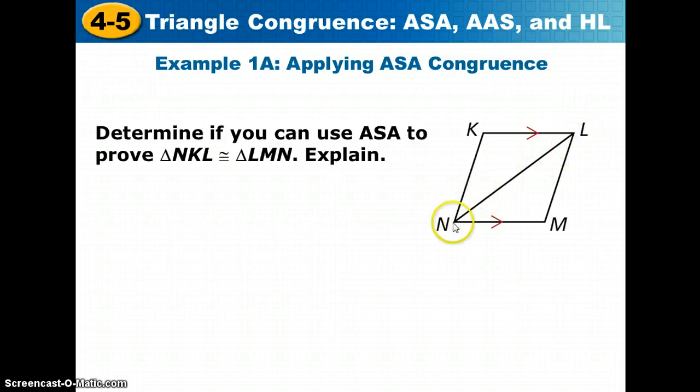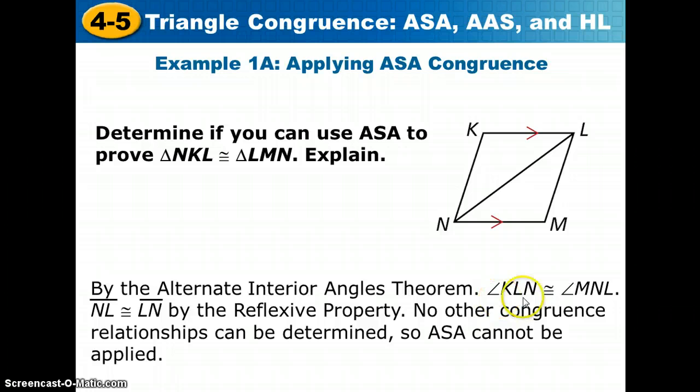So we have congruent angles. They share side NL. NL is congruent to itself by the reflexive property, so we have angle-side. We would need the other angle to be congruent. But unfortunately, we don't know that. By the alternate interior angles theorem, KL is congruent to MNL, and NL is congruent to itself by the reflexive property. But there are no other congruence relationships to be determined, so we cannot apply angle-side-angle. We only get angle-side. We would still need another pair of angles to be congruent.